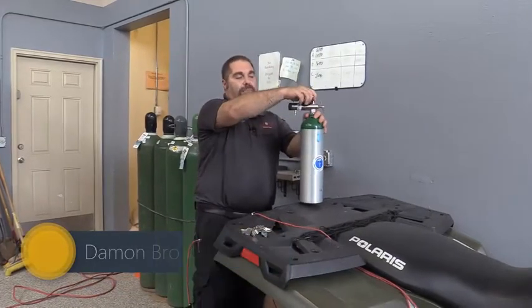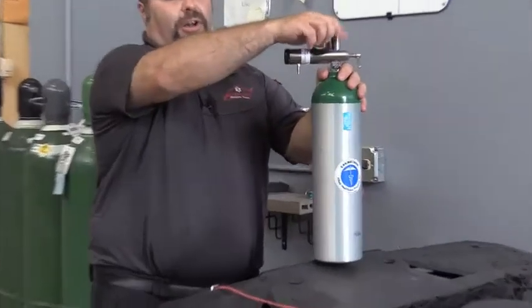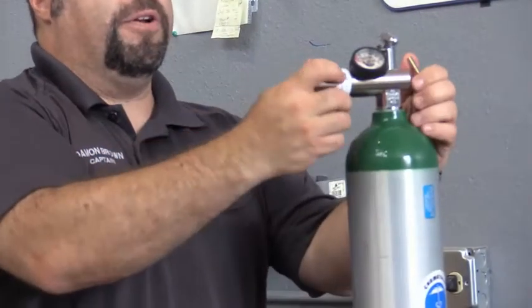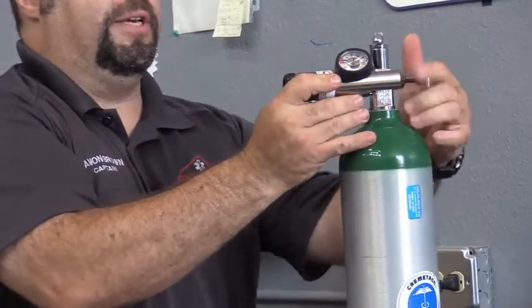First thing you're going to want to do is actually make sure that the bottle you want to fill is turned off with the top valve, and then you're going to need to remove the regulator. So go ahead and get that off.